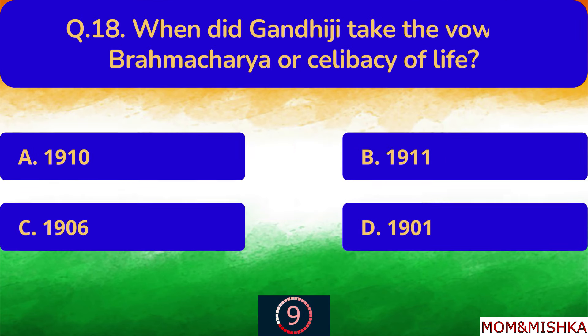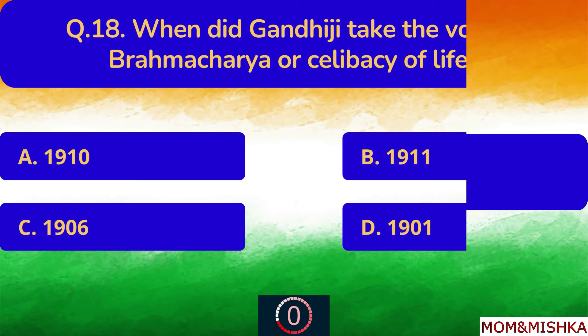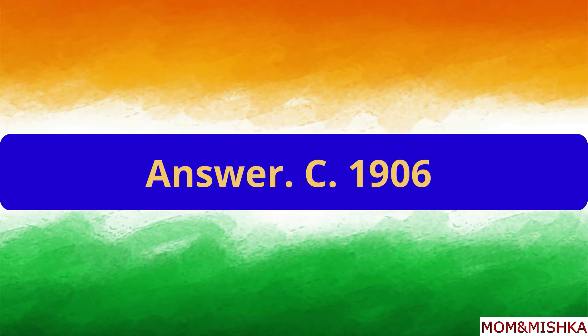When did Gandhiji take the vow of Brahmacharya, or celibacy for life? In year 1906. Option C.